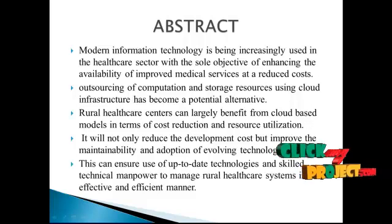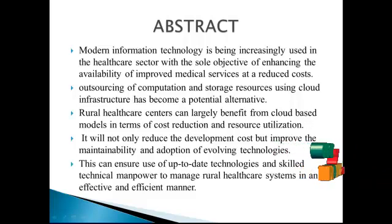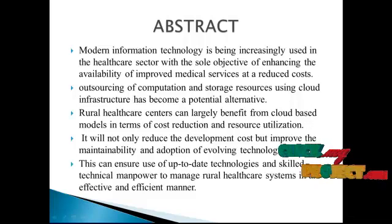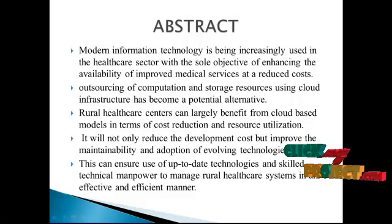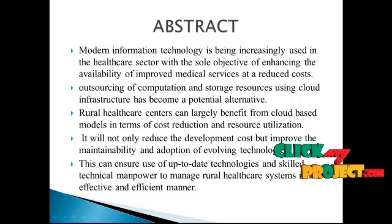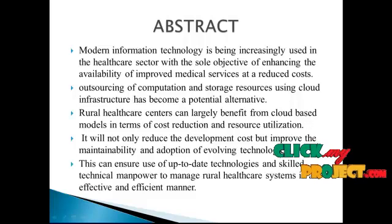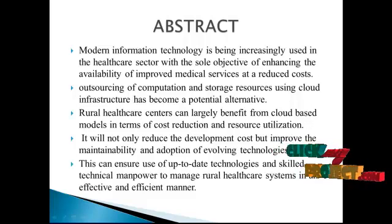The Rural Health Services have been developed as a tiered structure based on the population norms. The sub-center is the most visible institution and the first contact point between the primary health system and the community. Each sub-center is manned by auxiliary nurse midwives. Data facilities within these centers are not available. Reports on evaluation studies point to the lack of equipment, poor upkeep of equipment and improper functioning, or lack of complementary facilities such as running water, electricity backups, and so on. Unreliable water and power supplies also affect performance at the centers.